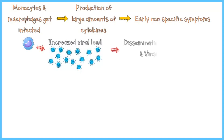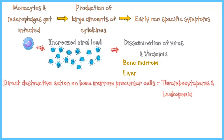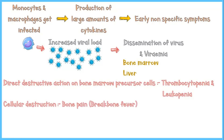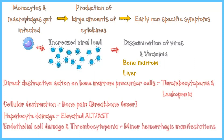The increased viral load results in dissemination of the virus via the bloodstream to vital organs including bone marrow and the liver. Direct destructive action on bone marrow precursor cells causes thrombocytopenia and leukopenia, as well as severe bone pain — also called break bone pain. Hepatocyte damage gives rise to elevated transaminases in blood, and due to endothelial cell damage and thrombocytopenia, the patient will have minor hemorrhagic manifestations.